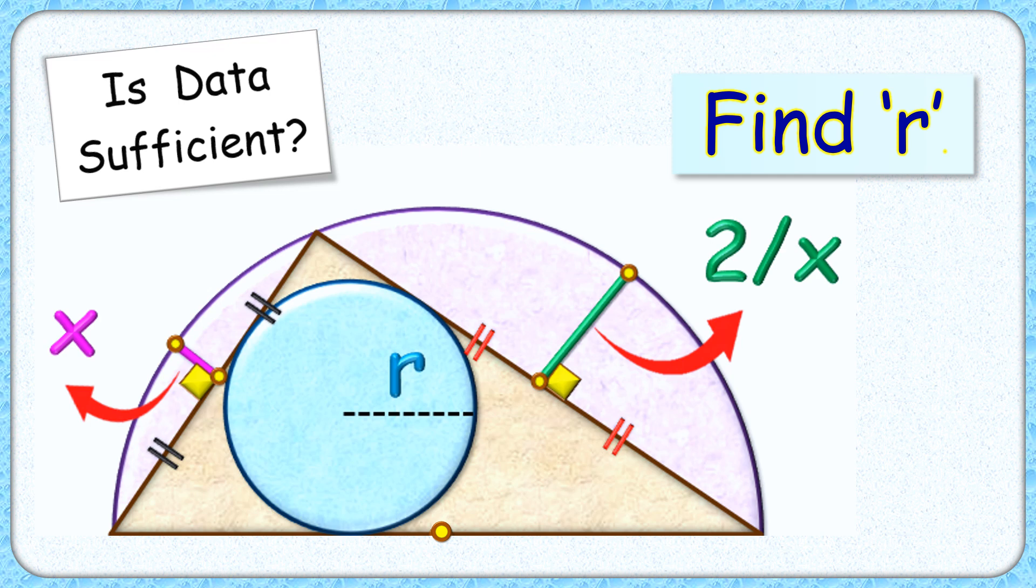Welcome everyone to this interesting question which at first glance looks impossible to solve. This question given to us is a semicircle with a triangle and an incircle inside it.